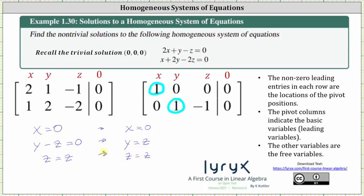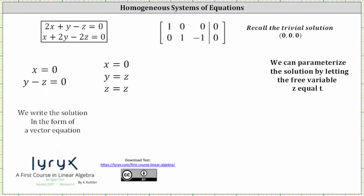This is one way to express the non-trivial solutions to the system, but we often parametrize these solutions by setting the free variables equal to new parameter variables. In this case, we let the free variable z equal t, giving us x equals 0, y equals t, and z equals t. This is another common way to express non-trivial solutions, and we can also write a matrix equation — also referred to as a vector equation.